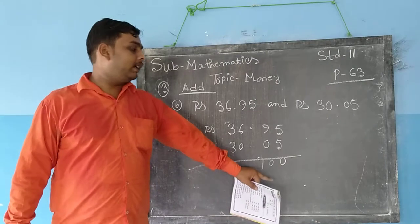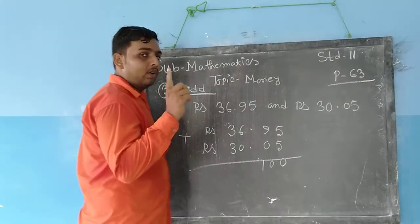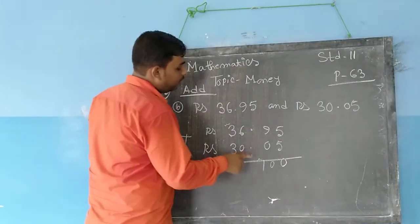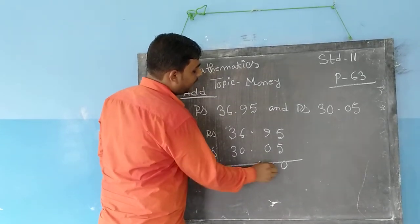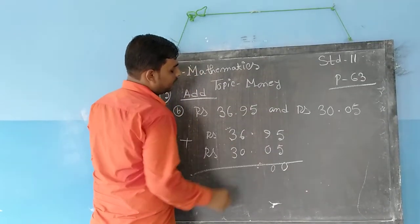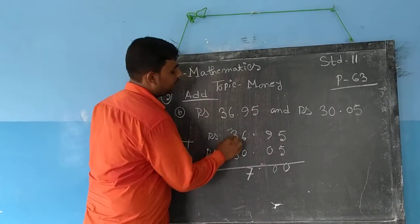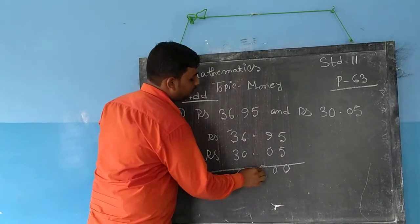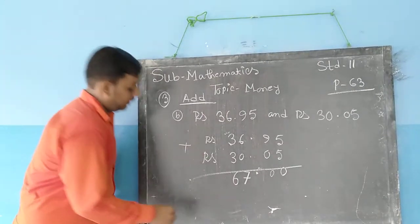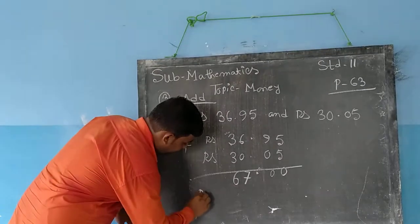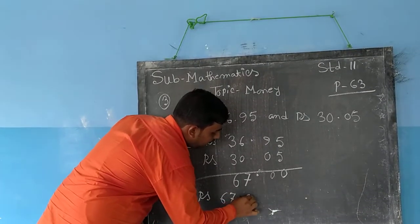100 paise means 1 rupee. So, the total is equal to 100 paise. The result is Rupees 67.00. So the total is equal to 67.00.